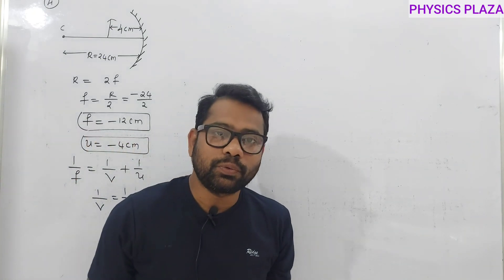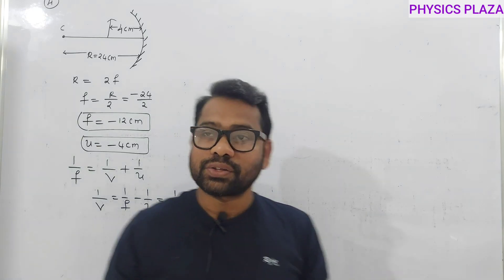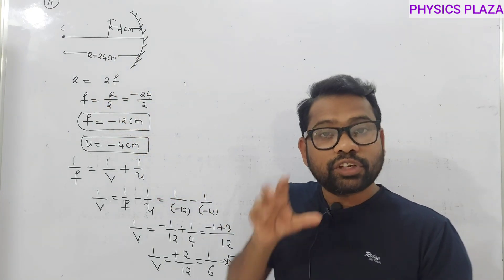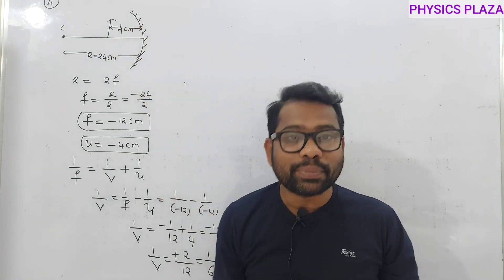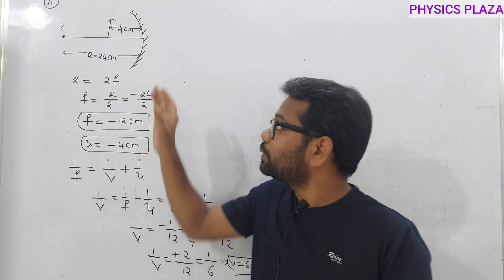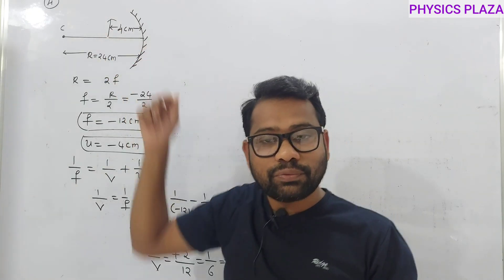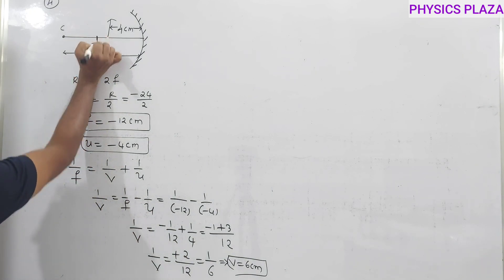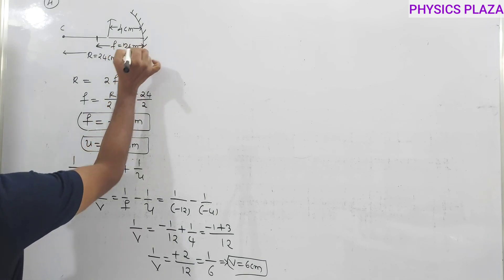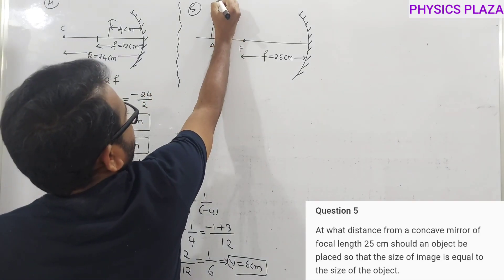When an object is placed 4 cm in front of a concave mirror of focal length 12 cm, the image is formed 6 cm behind the mirror. This is the sixth case of the concave mirror — object placed between the pole and focus. The focal length is 12 cm and the object at 4 cm is within that focal length.